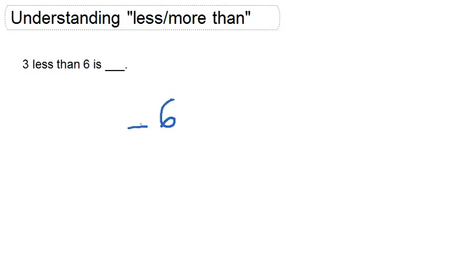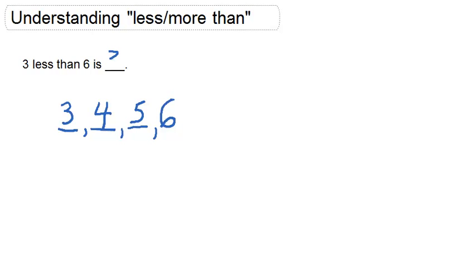What would be three numbers less than six? That's what we're really asking ourselves. Well, we know that one number less than six is five, two numbers less is four, and three numbers less than six is three. So the final answer to this question is three.